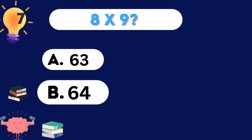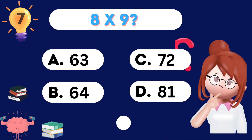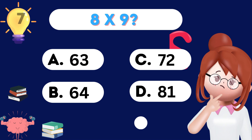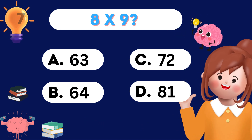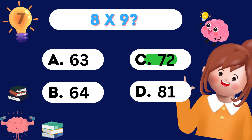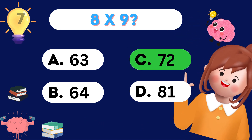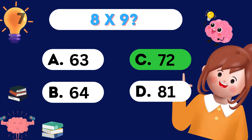What's 8 times 9? 8 times 9 is 72. Hooray!